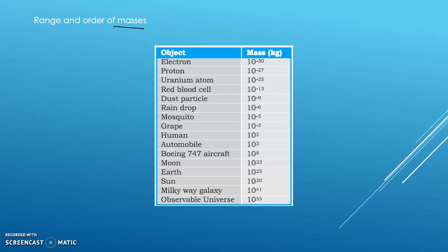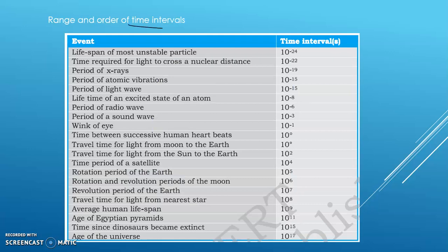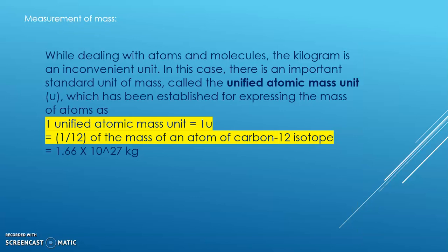The mass of the observable universe is 10 to the power of 55 kilograms. Now we will look at the time interval. We will also study mass measurement. For atomic and molecular masses, expressing mass in kilograms is not convenient, so we use the Unified Atomic Mass Unit (amu or u). 1 unified atomic mass unit is equal to 1/12th of the mass of an atom of carbon-12 isotope. The conversion is: 1 atomic mass unit equals 1.66 into 10 to the power of minus 27 kilograms.